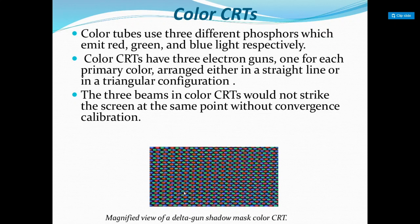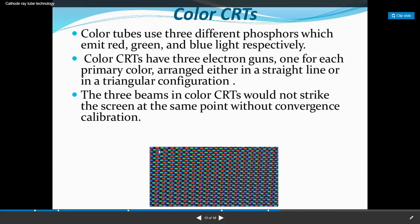For color CRT, there are three different phosphors — red, green, and blue. There are three electron guns, one for each primary color, arranged in a straight line or triangular form. The three beams do not strike the screen at the same point. When they need to illuminate a point in between, they make a mixture of colors and glow, which allows us to see the full picture.